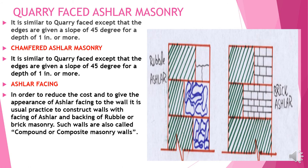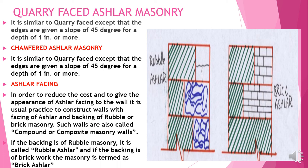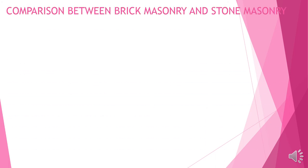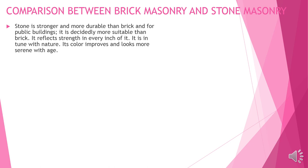Aslar facing: in order to reduce cost while giving the appearance of Aslar to the wall, it is usual practice to construct walls with facing of Aslar and backing of rubble or brick masonry. Such walls are also called compound or composite masonry walls. If the backing is rubble masonry it is called rubble Aslar; if the backing is brickwork, it is termed brick Aslar. Stone masonry is more durable than brick and is decidedly more suitable for public buildings.